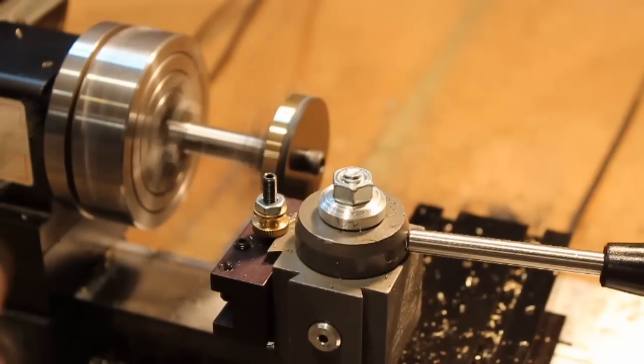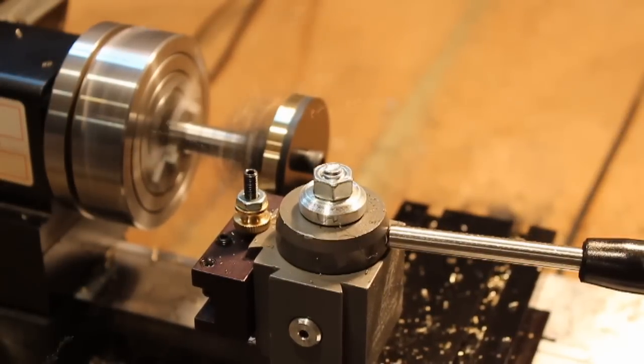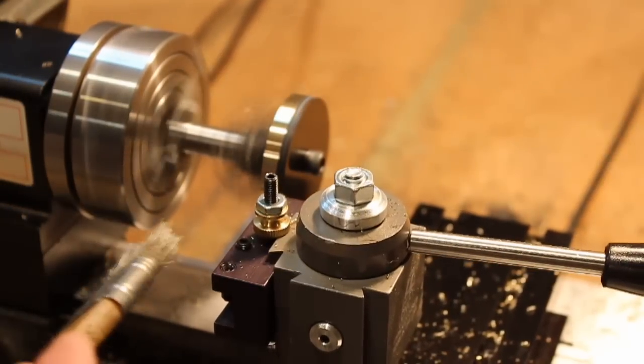We're getting very close to the intermediate dimension here where the gear blank should be just about round.